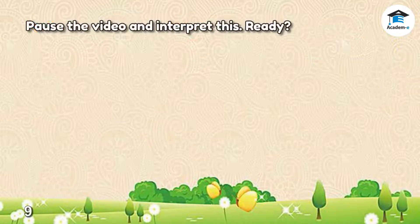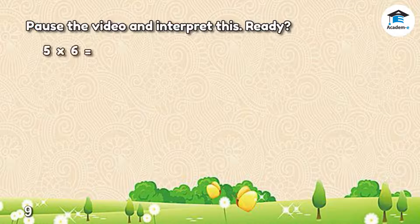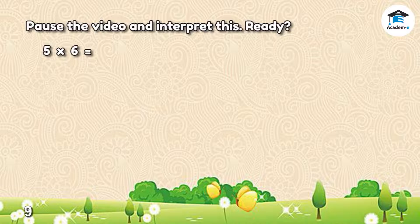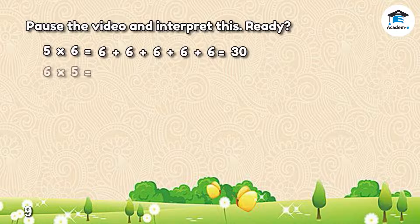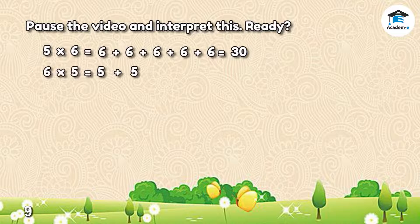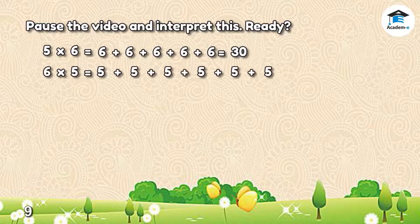Pause the video and interpret this. Are you ready? 5 by 6 is equal to what number? We could say that this is equal to 6 plus 6 plus 6 plus 6 plus 6, which is equal to 30. Next, 6 by 5 is equal to what number? One way to interpret this is to say that there are 6 groups of 5s. So we could say that this is equal to 5 plus 5 plus 5 plus 5 plus 5 plus 5, which is also equal to 30.